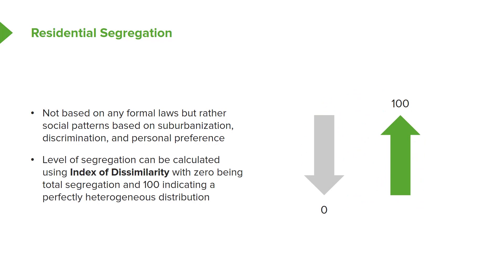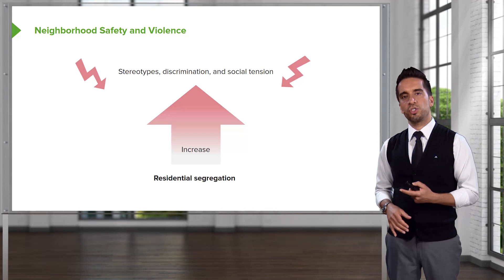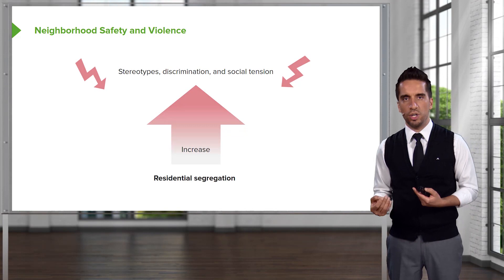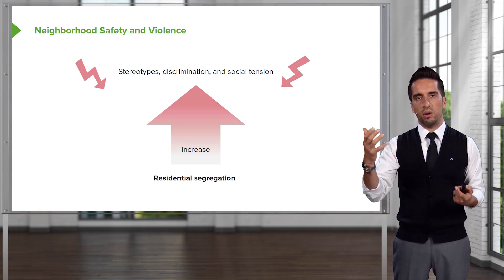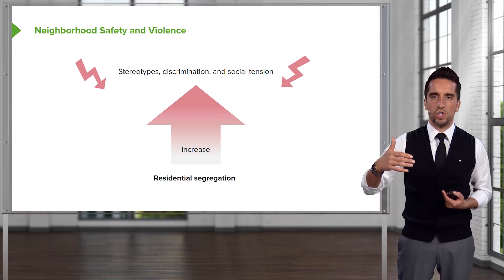We can actually do a little bit of math based on available data and calculate something called the index of dissimilarities. This is the level of segregation, with zero being total segregation and 100 indicating a perfectly heterogeneous distribution. At zero, you'd have drawn lines — all of these types of people are over here, all of those types of people are over there. At 100, there's a perfect mix of everybody. Levels of residential segregation increase based on stereotypes, discrimination, and social tension — the more segregation, the more stereotypes, discrimination, and tension.